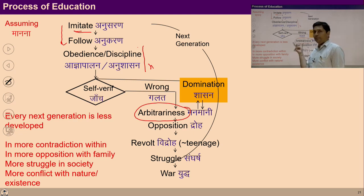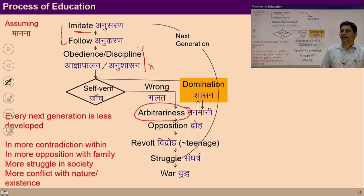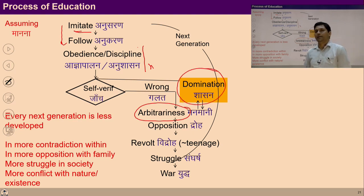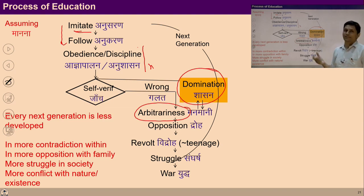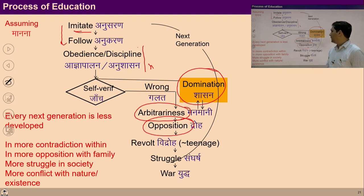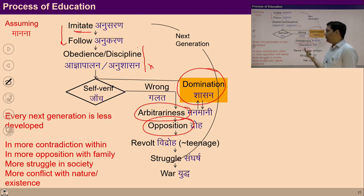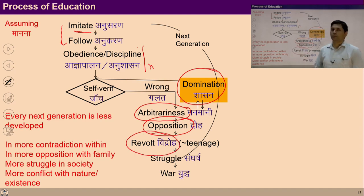Sometimes he listens to friends, sometimes to the school teacher, sometimes to parents, and his life becomes arbitrary. When you observe this arbitrariness, you start dominating the child. But domination is not naturally acceptable to anyone. The more you dominate the child, the more feeling of discomfort arises. When the child feels uncomfortable, he feels opposition, and sometimes expresses it, sometimes cannot. With this, he reaches a state of revolt.